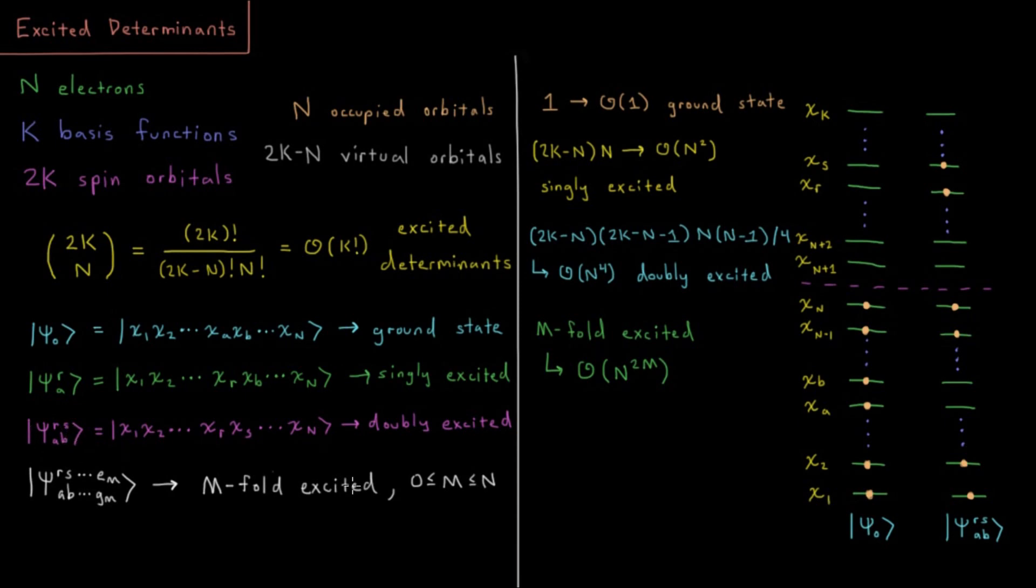We also have what are called doubly excited, in the example on the right here, where I've taken two electrons from spin orbitals A and B, move them up to R and S, that's doubly excited, and then it goes on from there. So we could have, in general, some m-fold excited determinant, where m goes all the way from zero at the ground state up to n, where all of the electrons have been excited into a higher energy spin orbital than is available to them.